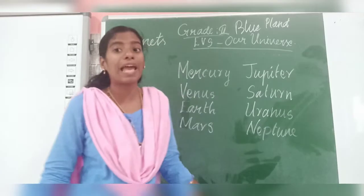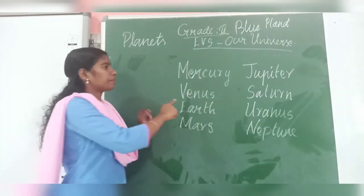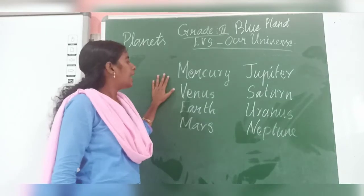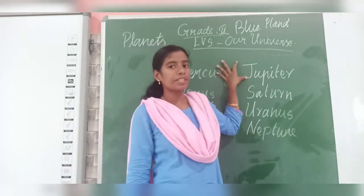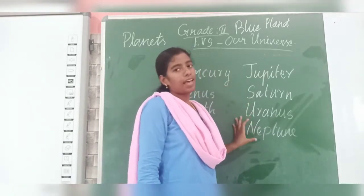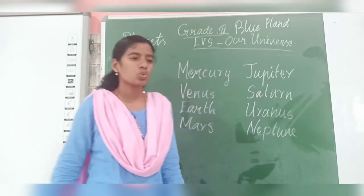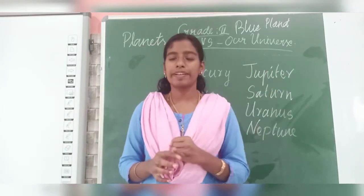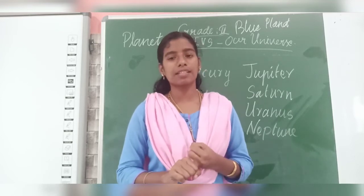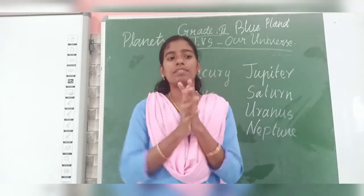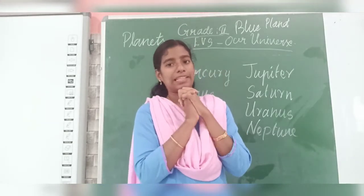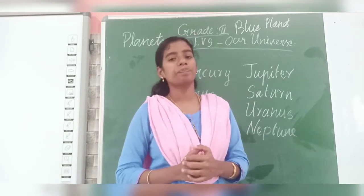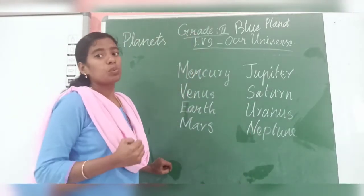These are the eight planets. Once again in English — repeat with me: Mercury, Venus, Earth, Mars, Jupiter, Saturn, Uranus, and Neptune. Some important words to learn: planets, solar system, universe, and blue planet. Earth is called the blue planet because it has plenty of water. These are the new spellings you need to learn.